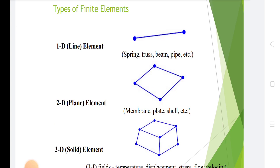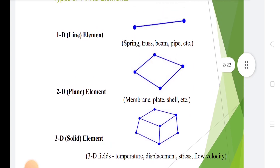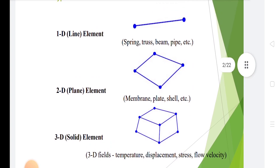In 2D plane elements there is membrane, plate, shell. In 3D solid elements, the fields include temperature, displacement, stress, and flow velocity.